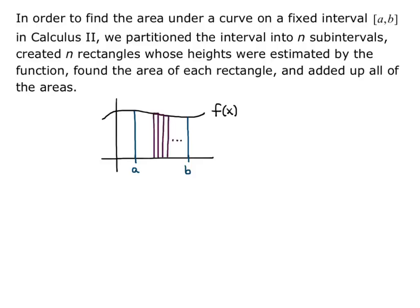So we created all of these small rectangles, each of them having a width of Δx, or the small change in x, and each of them having a height of f(x_i), where x_i was some x value within that subinterval over which the rectangle was created. The area was the limit as n goes to infinity of the sum from i equals 1 to n of f(x_i) times Δx. This turned into our integral from a to b of f(x)dx. That's how we found area under a curve in Calculus 2, and this method was called a Riemann sum.